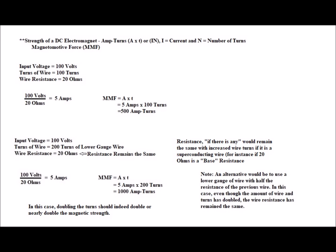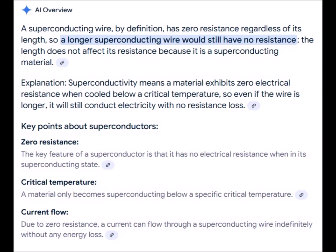A potential exemption from this would be in using superconducting wire. In this case doubling the turns of wire would certainly nearly double field strength as resistance would not be a factor. The only limiting factor would be one of space as we could only still wrap so much wire within a given volume.